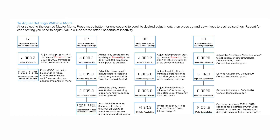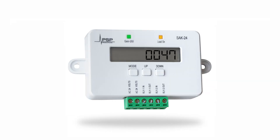The SAK24 can be set for generator load lockout so that the HVAC system is off whenever on generator power. This can be used to shut down the entire HVAC system or to lock out the strip heat on a heat pump system while allowing the heat pump and air handler to continue to run. This second application is very popular in the deep south.